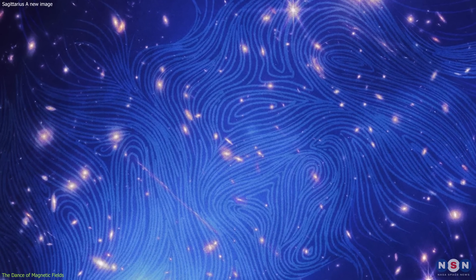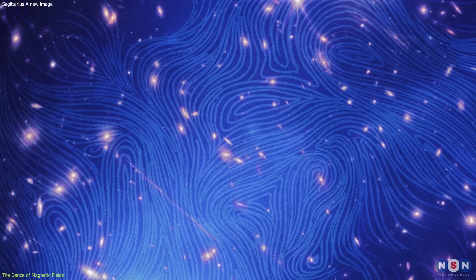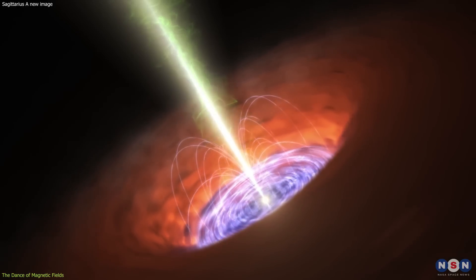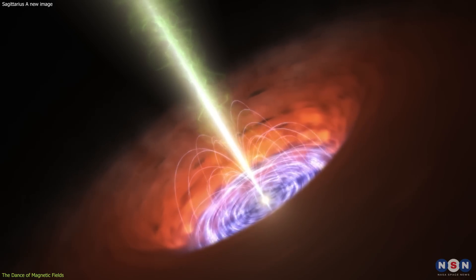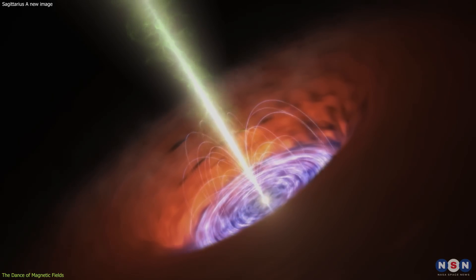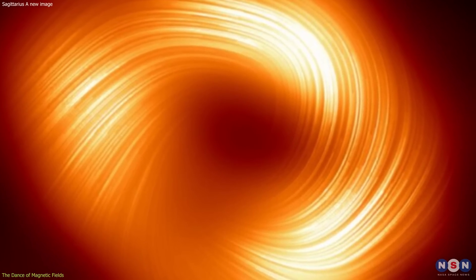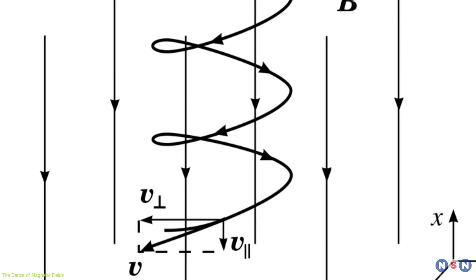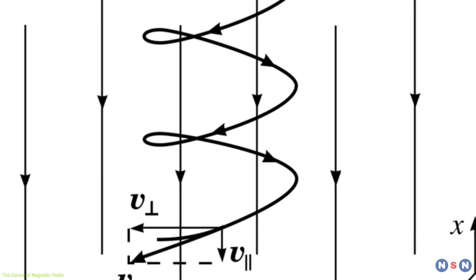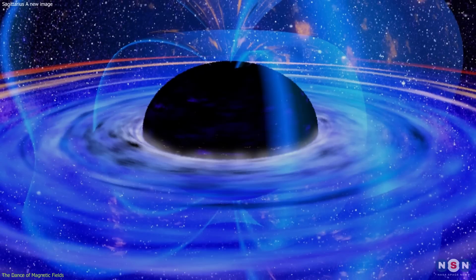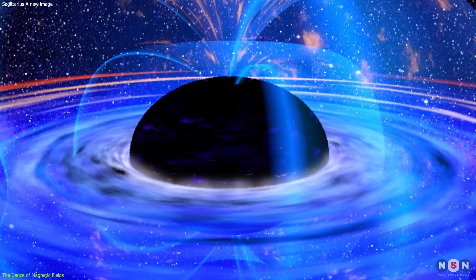Magnetic fields are like the cosmic threads that weave the fabric of the universe. Around black holes, they are thought to play a crucial role in governing the accretion of matter and the launching of jets. The telescope's polarization measurements have revealed these fields in stunning detail. Polarized light, emitted by electrons spiraling along magnetic field lines, serves as a tracer, illuminating the structure of the fields.